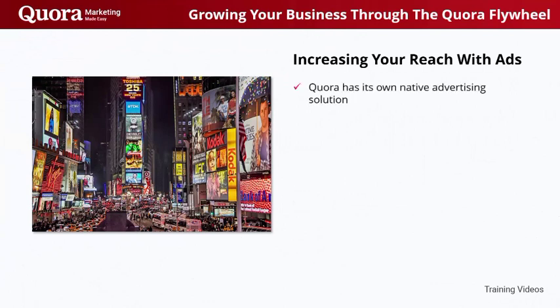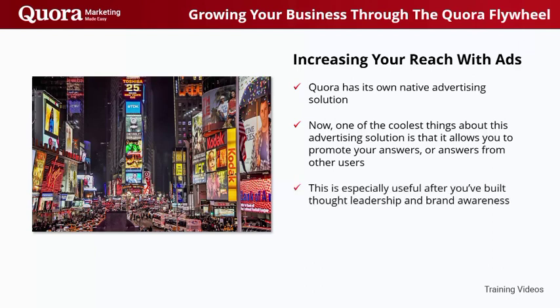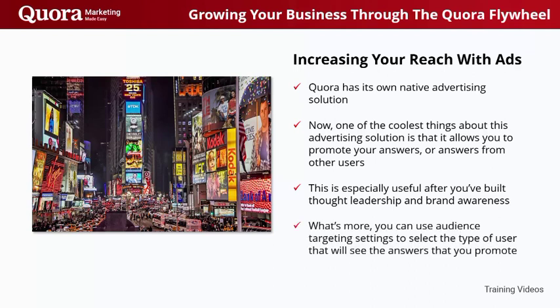Increasing your reach with ads. Quora has its own native advertising solution. This is great news for both users and advertisers, because it allows people to enjoy the site without having their experience interrupted by ads from external platforms. One of the coolest things about this advertising solution is that it allows you to promote your answers or answers from other users. This provides you with great flexibility when it comes to increasing your reach, not only by promoting your own content, but also by leveraging social proof. This is especially useful after you've built thought leadership and brand awareness. For example, you can search for mentions of your brand in Quora, such as people reviewing your products or citing your content in answers, and then boost these answers with an ads campaign. You can use audience targeting settings to select the type of user that will see the answers that you promote, helping you reach the type of user that is most likely to consume your content and buy your products.